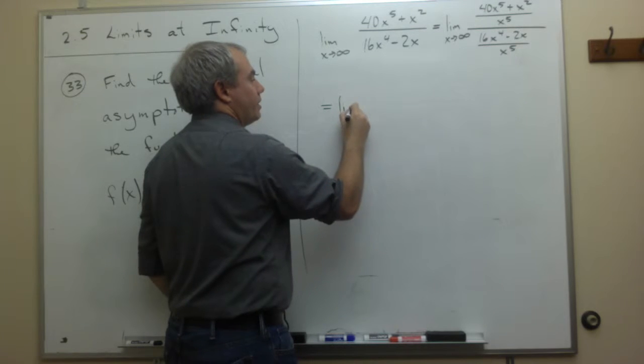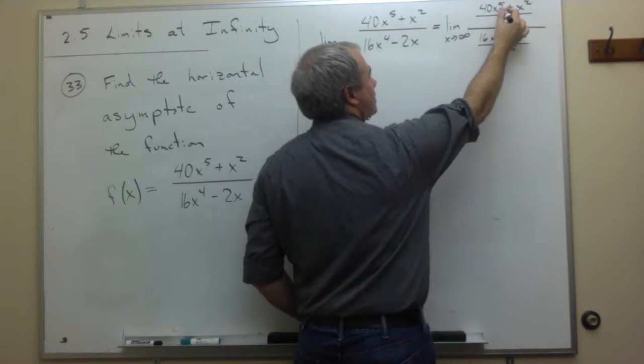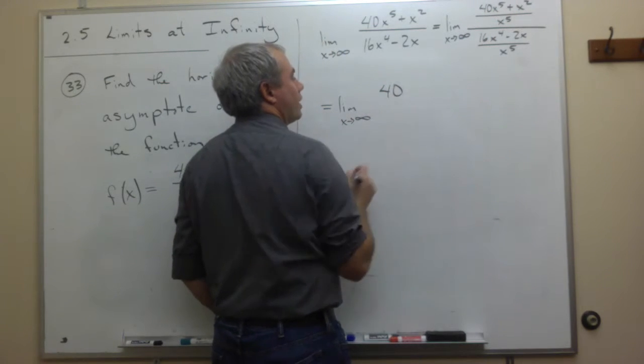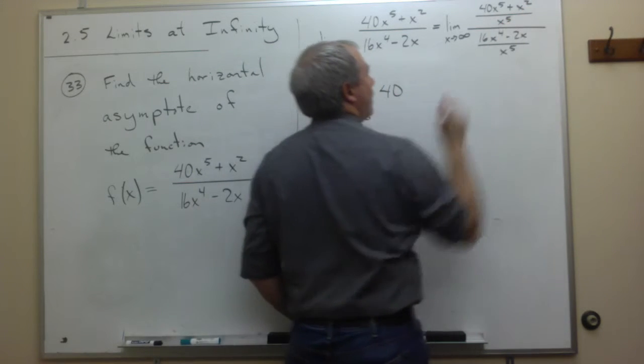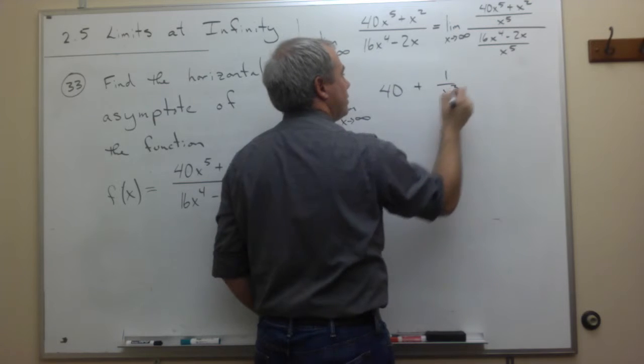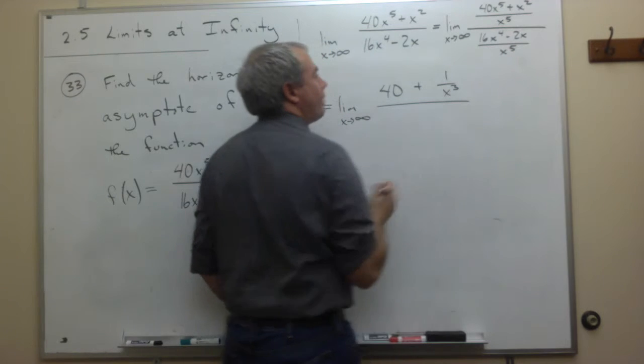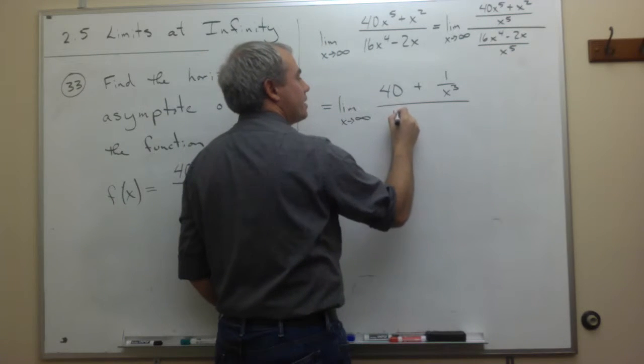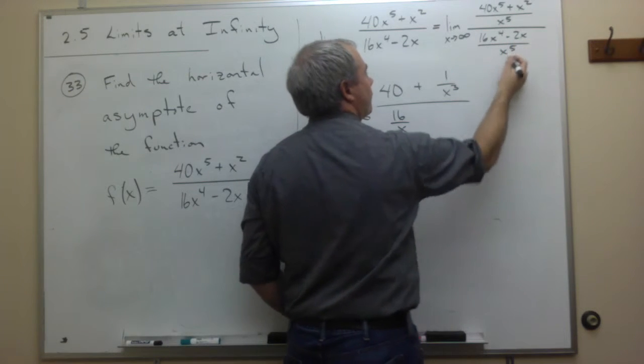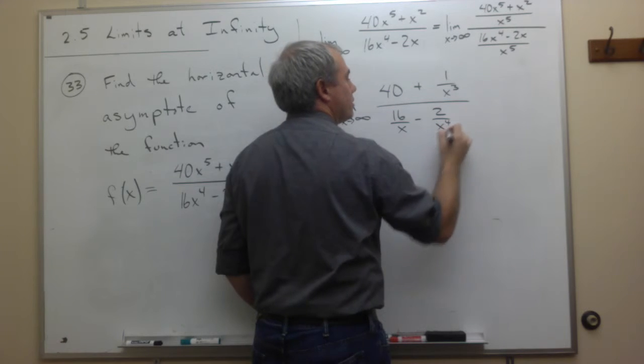I get the limit as x goes to infinity. On top, I have 40x to the fifth divided by x to the fifth. In other words, 40. I have x squared divided by x to the fifth, which is 1 over x cubed. On the bottom, I have 16x to the fourth divided by x to the fifth, which is 16 over x. And finally, I have negative 2x over x to the fifth, which is minus 2 over x to the fourth.